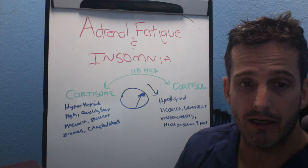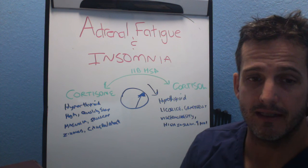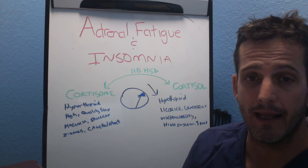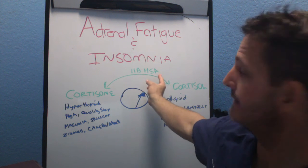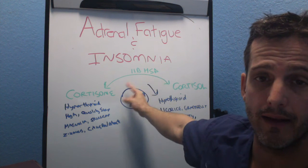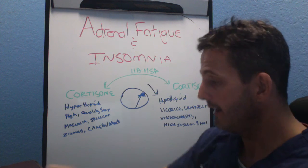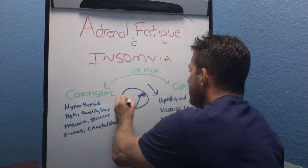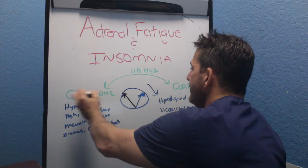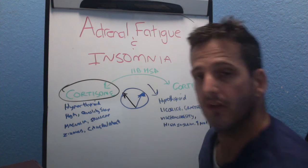So again: Magnolia, Skullcap, Zysphus, and Citrus Peel Extract. What these will do is upregulate 11-beta-HSD and shift the dial to produce more cortisone.